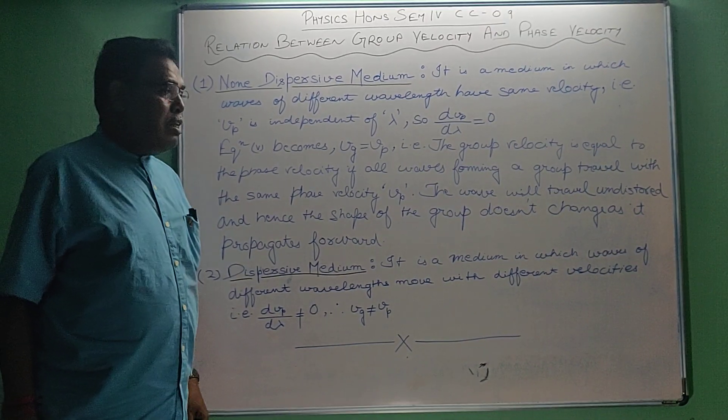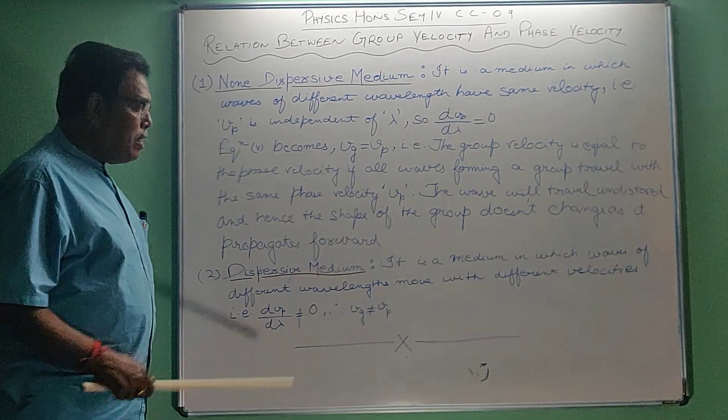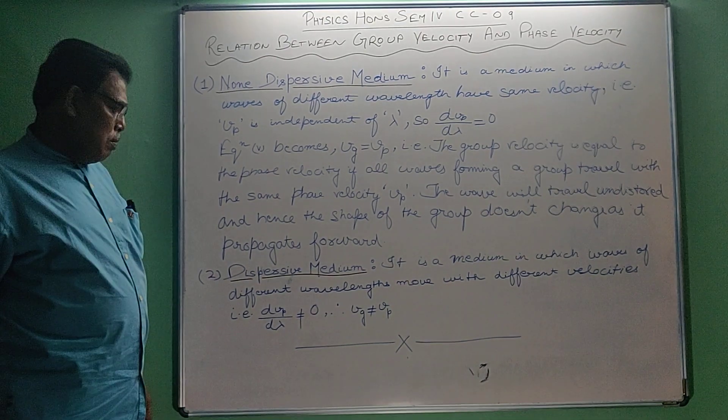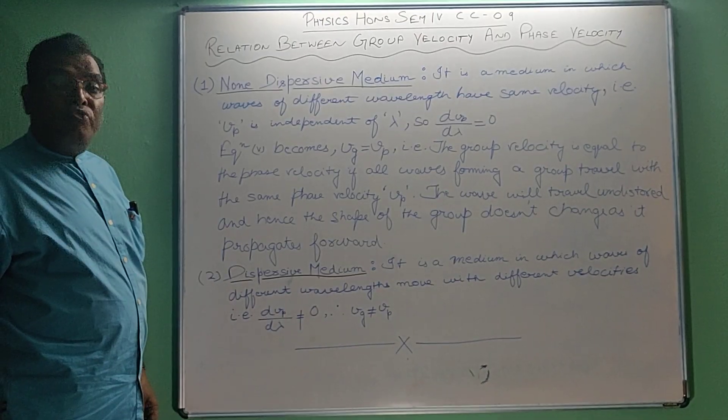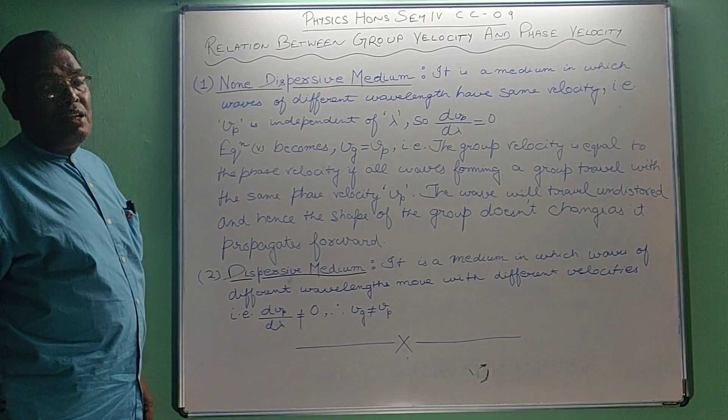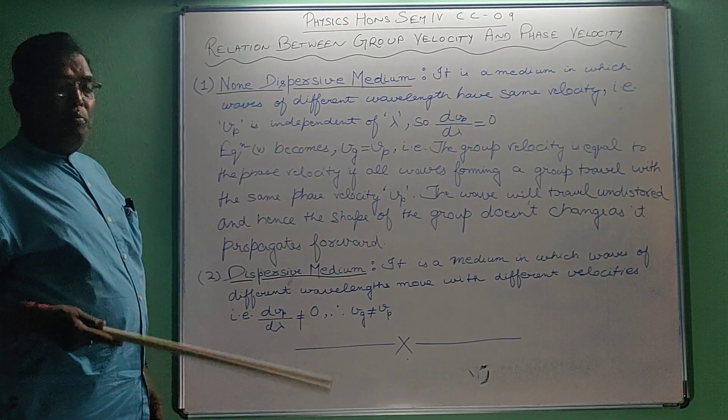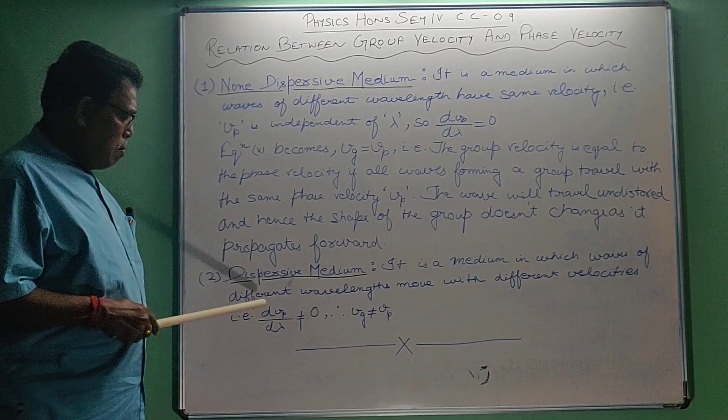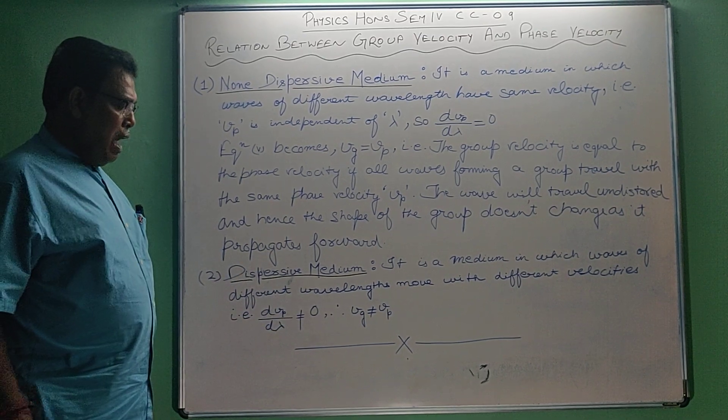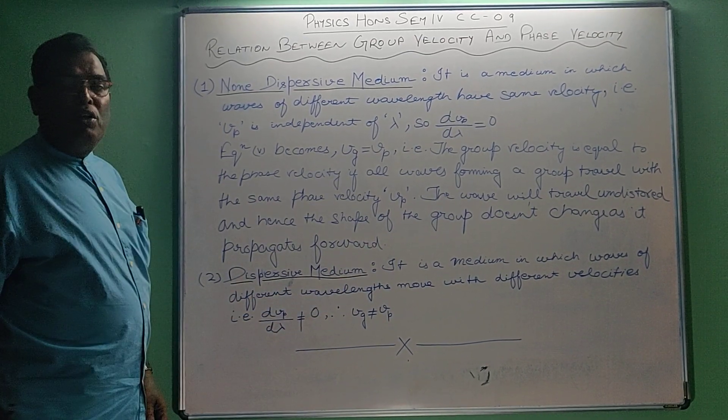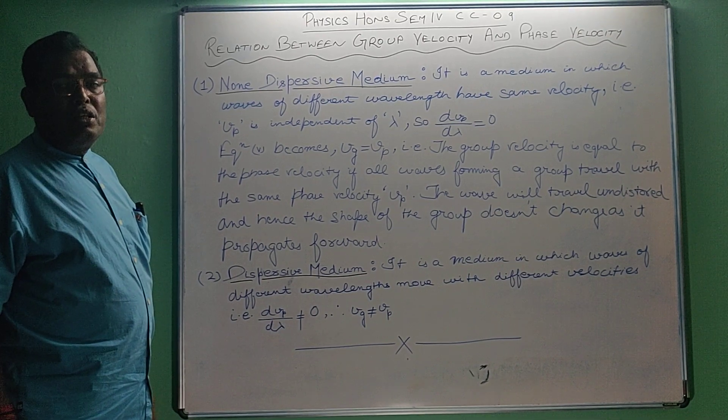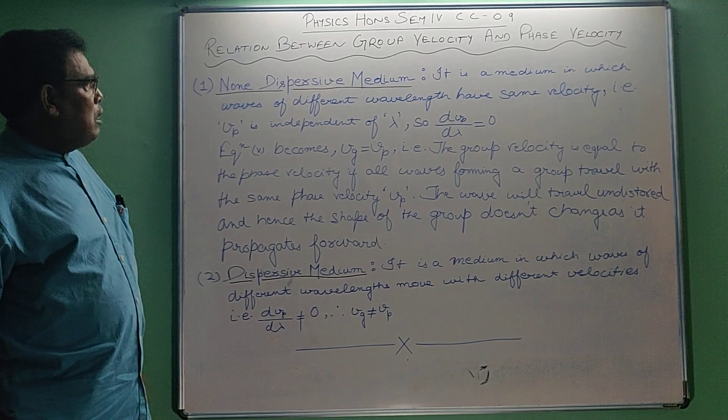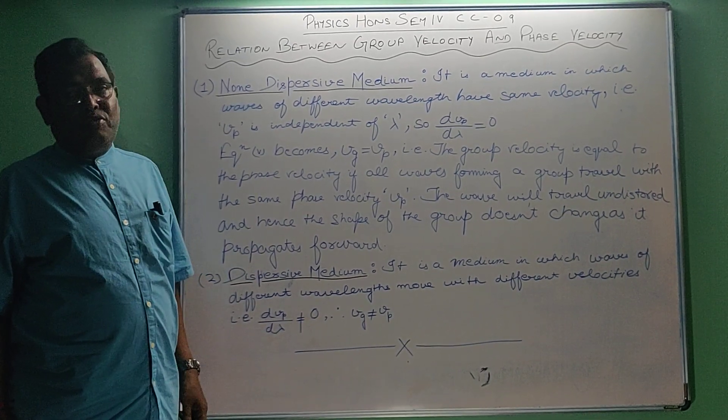And the second special case is dispersive medium. It is a medium in which waves of different wavelengths move with different velocities. In non-dispersive same velocity, but in dispersive with different velocity. This means dvp by d lambda is not equal to 0, and therefore vg is not equal to vp. That is group velocity is not equal to phase velocity. This is all about our relation between group velocity and phase velocity.